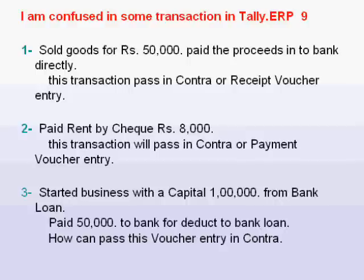Passing this payment voucher entry will reduce our bank balance. His third problem is: started business with a capital of $100,000 from a bank loan, and paid $50,000 to the bank to reduce the bank loan. How can we pass this voucher entry in contra?